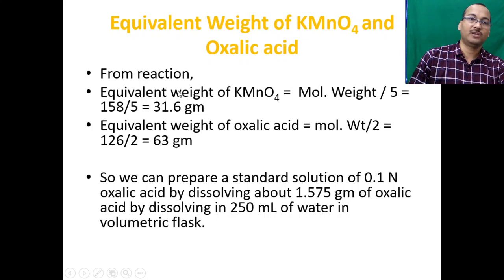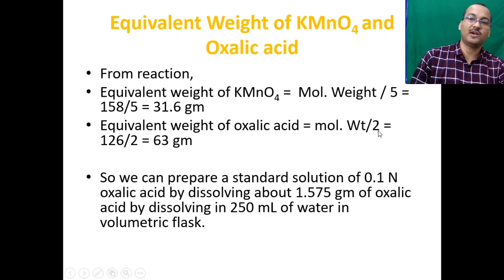From the reaction, in KMnO₄ five electrons are involved, so the equivalent weight of KMnO₄ = molecular weight / 5 = 158/5 = 31.6 g. The equivalent weight of oxalic acid = molecular weight / 2 = 126/2 = 63 g. A standard solution of 0.1 N oxalic acid can be prepared by dissolving 1.575 g of oxalic acid in 250 mL of water in a volumetric flask.